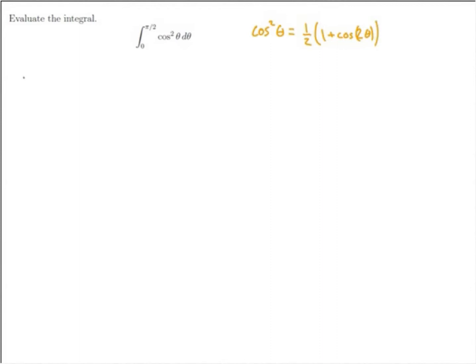If I write my definite integral using this identity, I'll be in business. So this is the definite integral from 0 to pi over 2, 1 half times 1 plus cosine 2 theta.